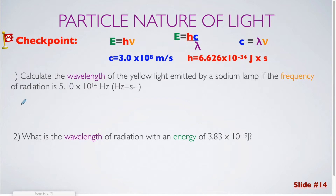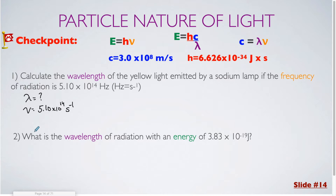The first thing we need to do is write down what variables we are given and what we are looking for. We are trying to calculate the wavelength, so lambda is equal to question mark. We are given the frequency, which is 5.10 times 10 to the 14th hertz — I'm going to use s to the negative 1 or inverse seconds instead, but that means the same exact thing as hertz. We are going to need the speed of light because the equation which has both wavelength and frequency is c equals lambda times nu. So I'm going to write down c equals 3.0 times 10 to the 8th meters per second.